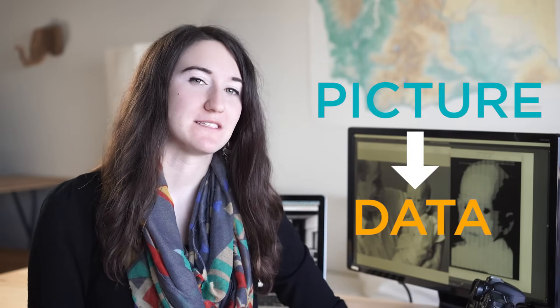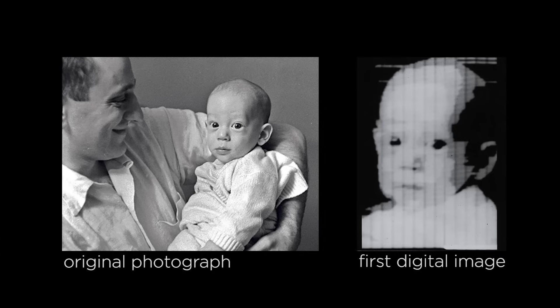When people first faced the problem of how to show a picture on a screen, they had to come up with a way to break the image down into data. In 1957 an early computer engineer named Russell Kirsch took a picture of his infant son and scanned it. It was the first digital image, a grainy black and white baby picture. And that's how the pixel was born.